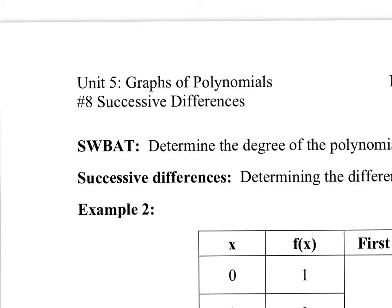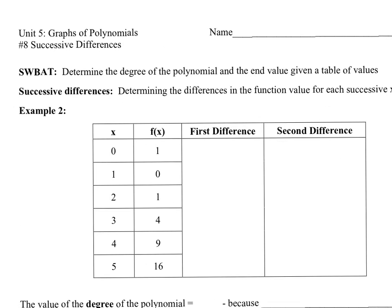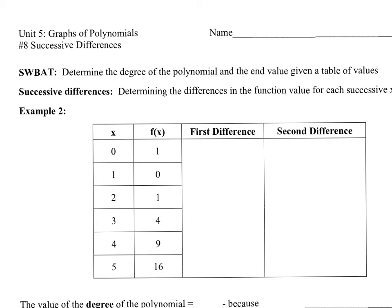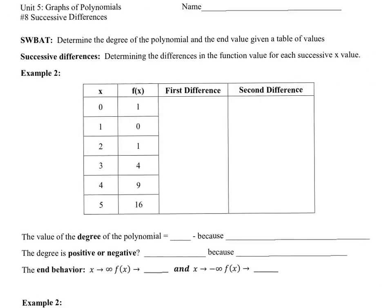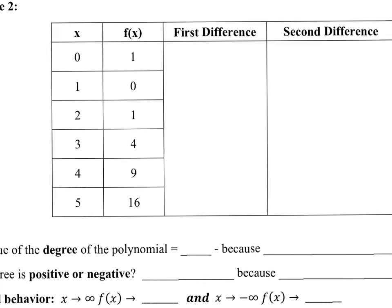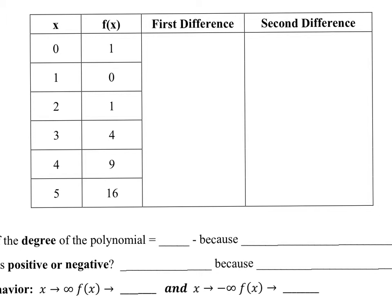Unit 5, number 8: successive differences — the last section of this unit. Successive differences is the difference between the function values for each successive y-value. All that means is you're going to be looking at a table of values and be able to tell what kind of function it is — at least what degree it is and its end behavior — just by looking at the difference between each function value. It's actually quite a cool phenomenon.